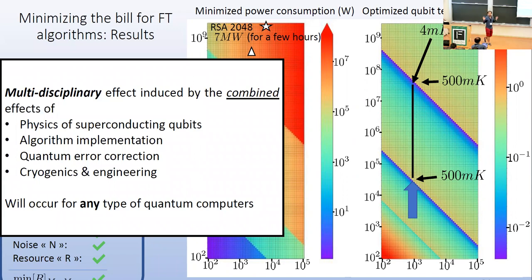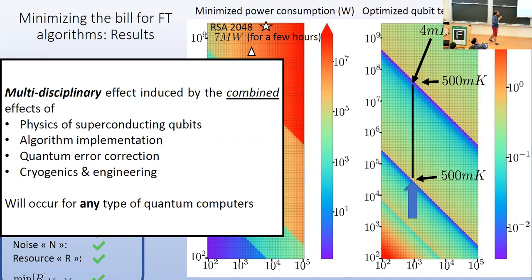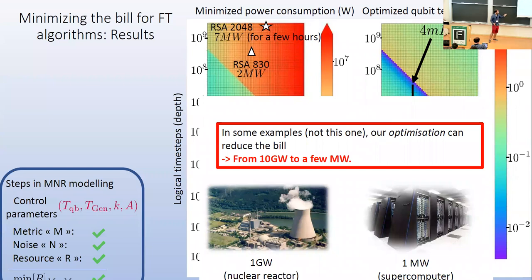This qualitative behavior should occur for any quantum computer model based on any technology — it's a truly multidisciplinary effect, driven by the physics of the superconducting qubits, the noise model, the algorithm, and the quantum error correction, all connected through the cryogenics energy cost. In some examples, the optimization can reduce the power bill significantly — from 10 megawatts down to a few megawatts. One counterintuitive insight is that it can be better to have more physical qubits per logical qubit, because it allows you to maintain qubits at higher temperature and save cooling power — something you cannot see by reasoning in an isolated manner.